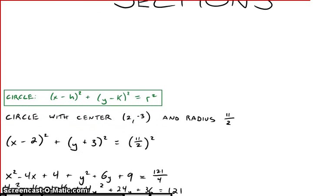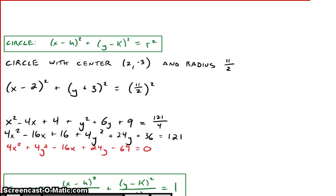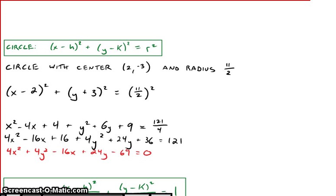We started with circles. Circles had a general formula with h and k and r which referred to the center and the radius of the circle. Here is just one example circle with center (2, -3) and radius 11/2. It can be represented with this standard form circle equation.